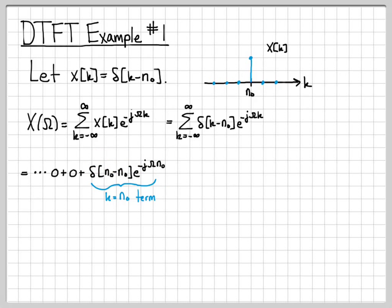This is the k equals n naught term. And then after that term, everything else is zeros. So in this infinite sum, every term is zero except for one term. And the one term that is not zero is this right here.